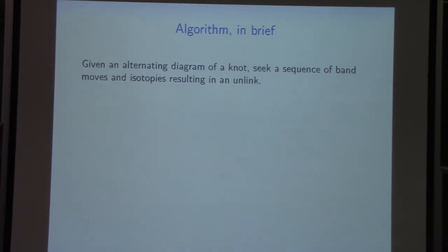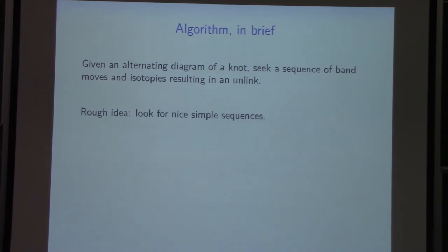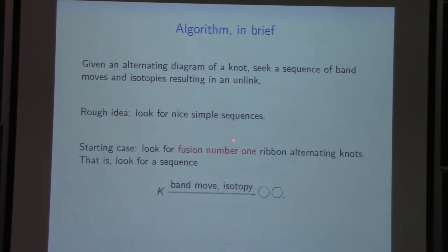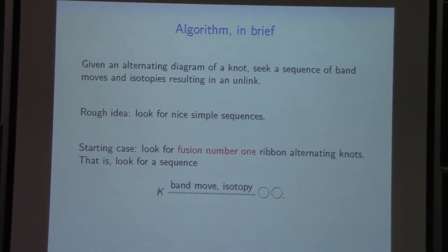Given an alternating diagram, we want a computer to find a sequence of band moves and isotopies ending in an unlink. We look for nice simple sequences, since alternating knots should have nice simple slice disk movies. We distinguish by fusion number — how many bands we need. The simplest case is a single saddle: fusion number one. We look for a sequence starting with your knot, a single band move, followed by an isotopy — some sequence of Reidemeister moves — ending in a two-component unlink.